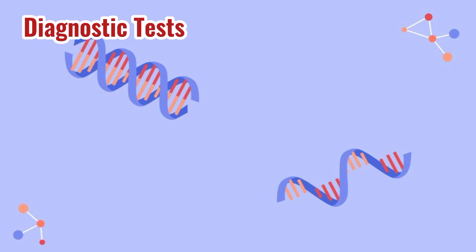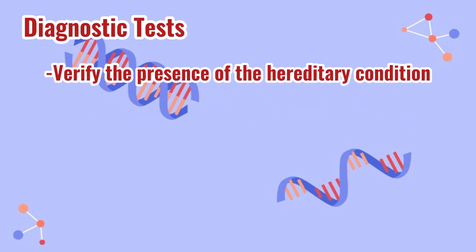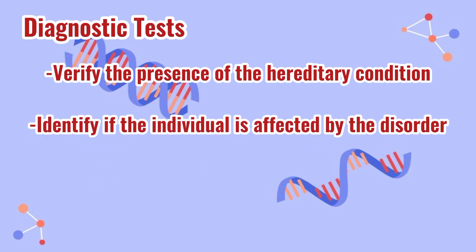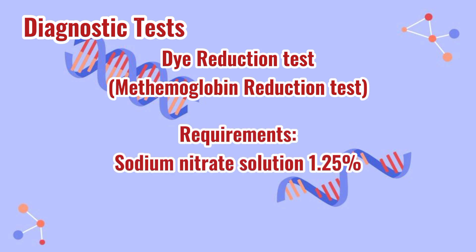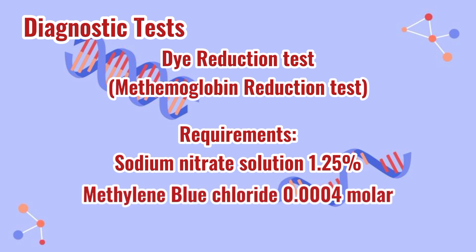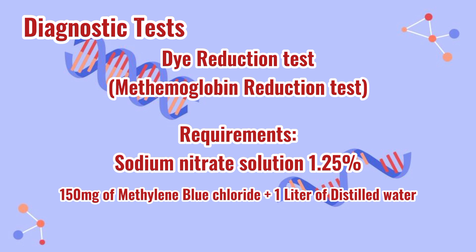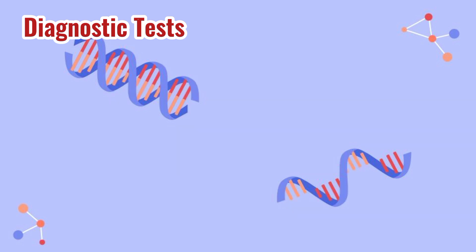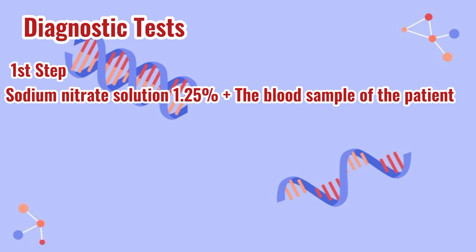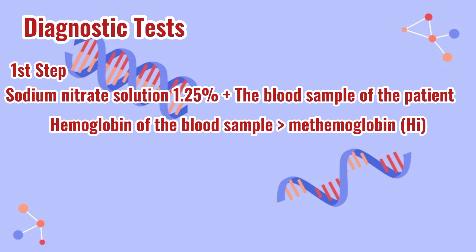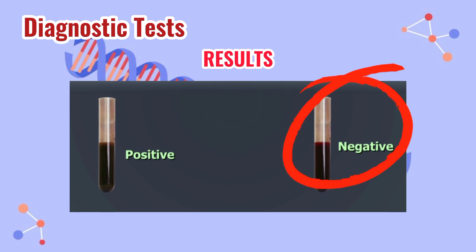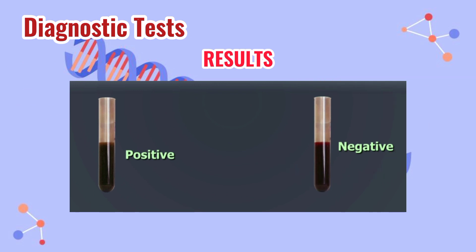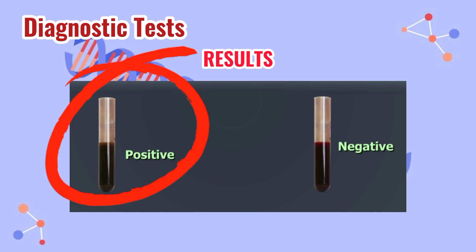Diagnostic tests are provided to verify the presence of these hereditary conditions and identify whether an individual is affected by the disorder. First is the dye reduction test, also known as the methemoglobin reduction test. This test requires a 1.25% sodium nitrate solution and methylene blue chloride at 0.00004 molar — basically 150 mg of methylene blue chloride added to 1 liter of distilled water. The test starts by adding sodium nitrate to the blood sample, transforming hemoglobin into methemoglobin. Methylene blue is then added. A clear red color result indicates normal reconversion of methemoglobin back to hemoglobin, while a brown color indicates a G6PD-positive result.